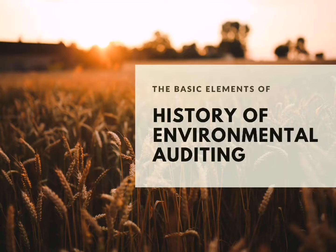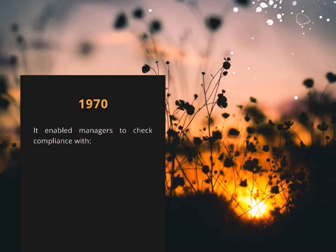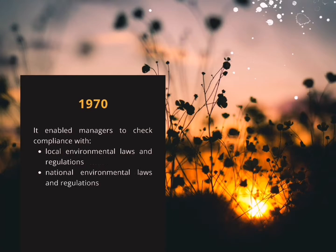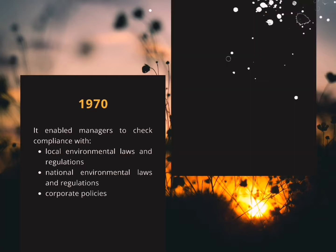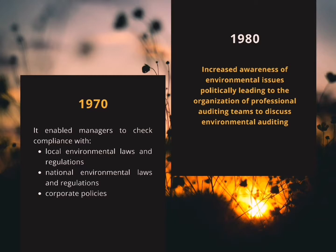The history of environmental auditing begins in 1970, when it enabled managers to check compliance with local environmental laws and regulations, as well as national environmental laws, and to incorporate corporate environmental policies. Environmental auditing only became widely accepted by industry in the late 1980s as a common management tool in developed countries, and is increasingly being applied in developing countries by both foreign and local industry.